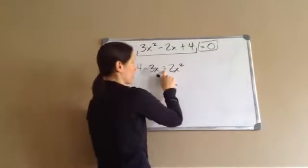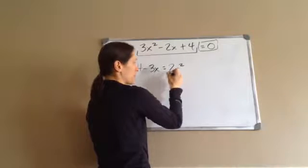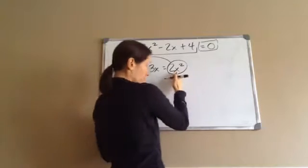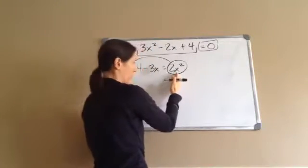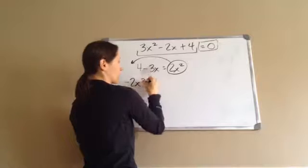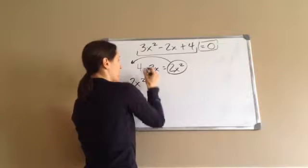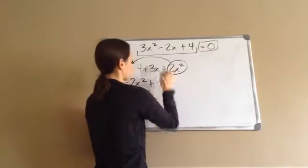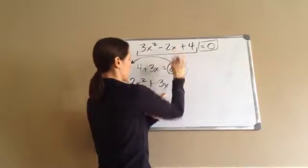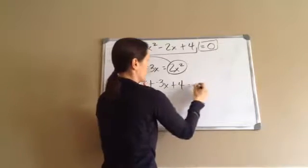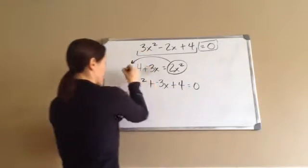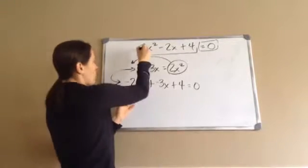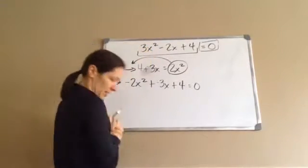The equal sign is here, so what I have to do is get this 2x squared over here. It's a positive 2x squared, so when we bring it across it becomes a negative 2x squared. And I'm going to change this to a plus negative. So then I go plus negative 3x because I want x squared, then x, then plus my 4, and then equals 0. So I took what they gave me and put it in standard form.